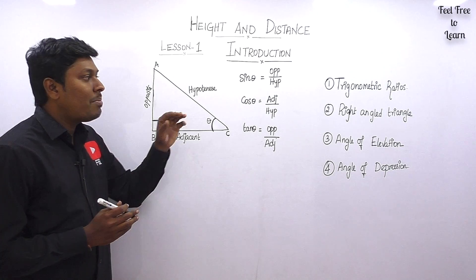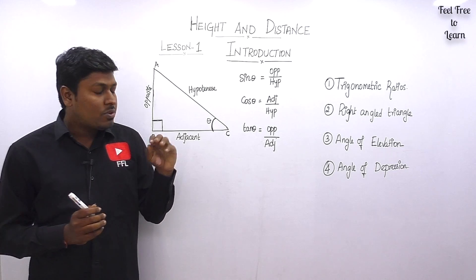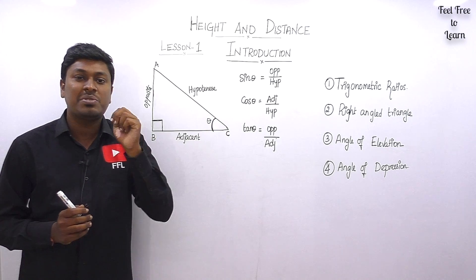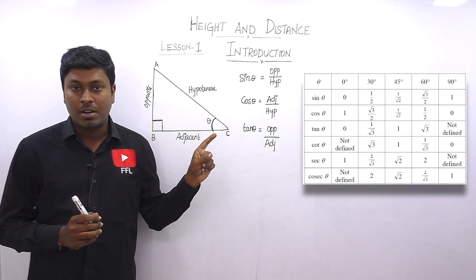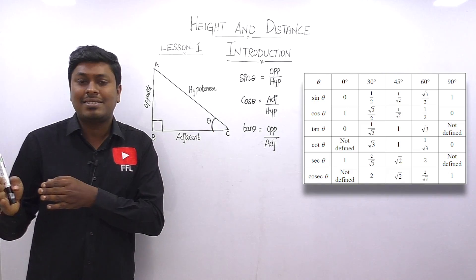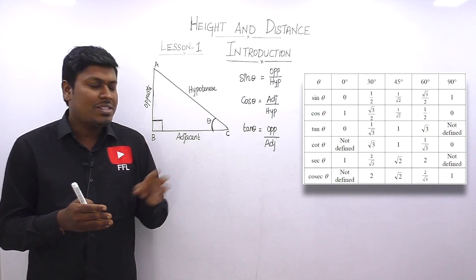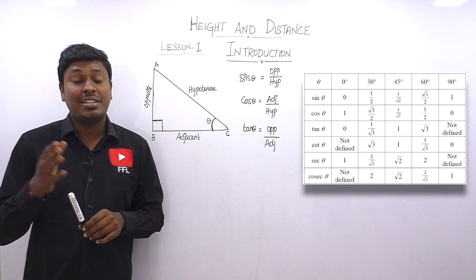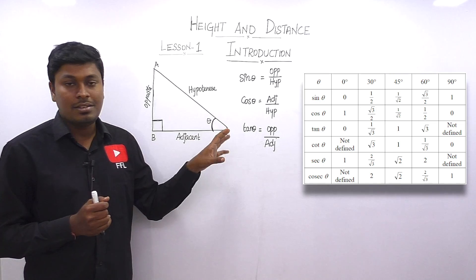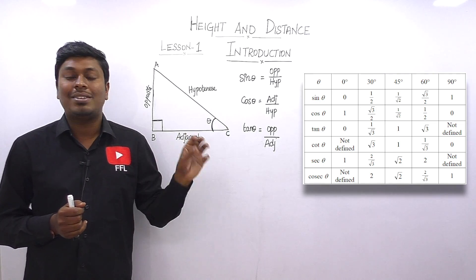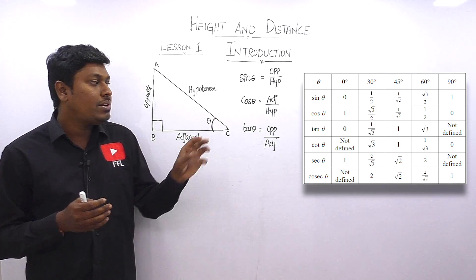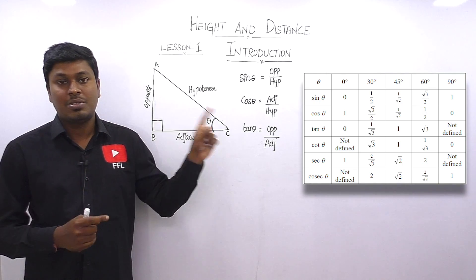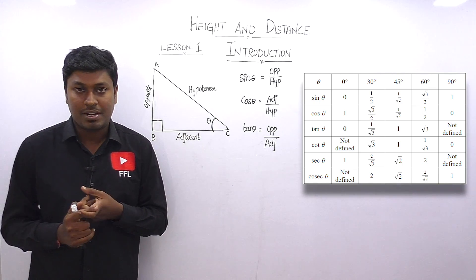The first point is trigonometrical ratios. Before solving a question, you need to learn the trigonometrical ratios, which is most important. You need to learn this tabular column — values like tan 60°, tan 30°, sin 60° — which we learned in 10th or 11th standard trigonometry. This tabular column is most important.